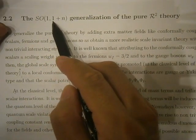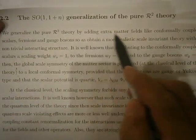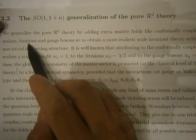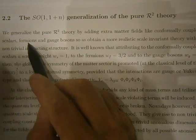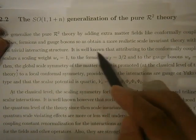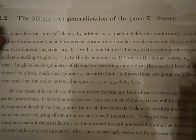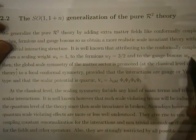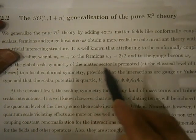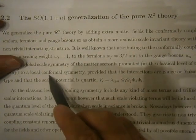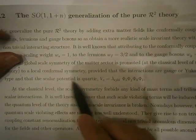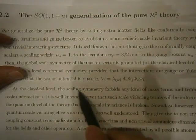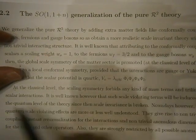The SO(1+n) generation of the pure R^2 theory, generalization by adding matter fields like conformally coupled scalars, fermions and gauge bosons, to obtain a more realistic theory with non-trivial interaction structure. The conformally coupled scalars with gauge bosons and global scale symmetry, scale invariance at the classical form of the local conformal symmetry. The SO(1) theory provides the gauge bosons type of scalar potential.